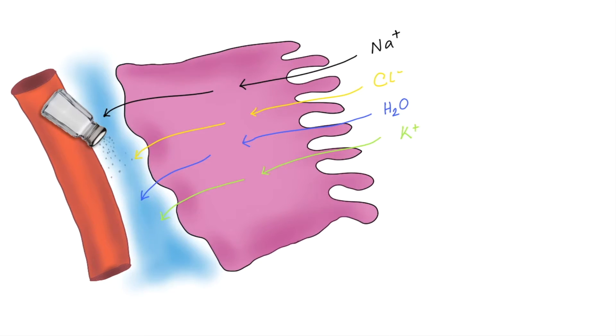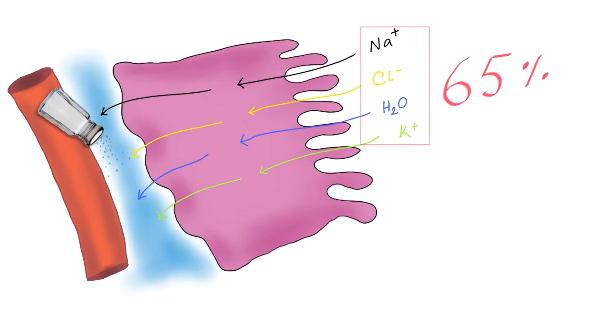65% of the potassium is reabsorbed as well as 90% of the bicarbonate ions, which are important in maintaining the pH of the blood. But glucose and amino acids are reabsorbed around 100% back into the blood to be used in the process such as respiration and making proteins.